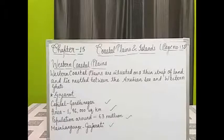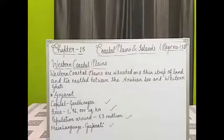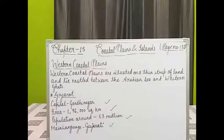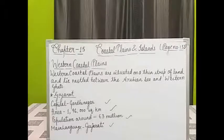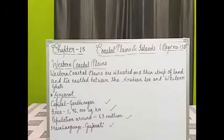Gir Forest, Lothal, Dholavira, and Mahatma Gandhi's Sabarmati Ashram are famous tourist destinations. Lothal and Dholavira are important historical spots which you will study in your next class. Ahmedabad, Surat, Vadodara, and Rajkot are the main cities of the state. Gandhinagar is named after Mahatma Gandhi and has the Akshardham Temple, Indroda Nature Park, and Sarita Udyana among its monuments.